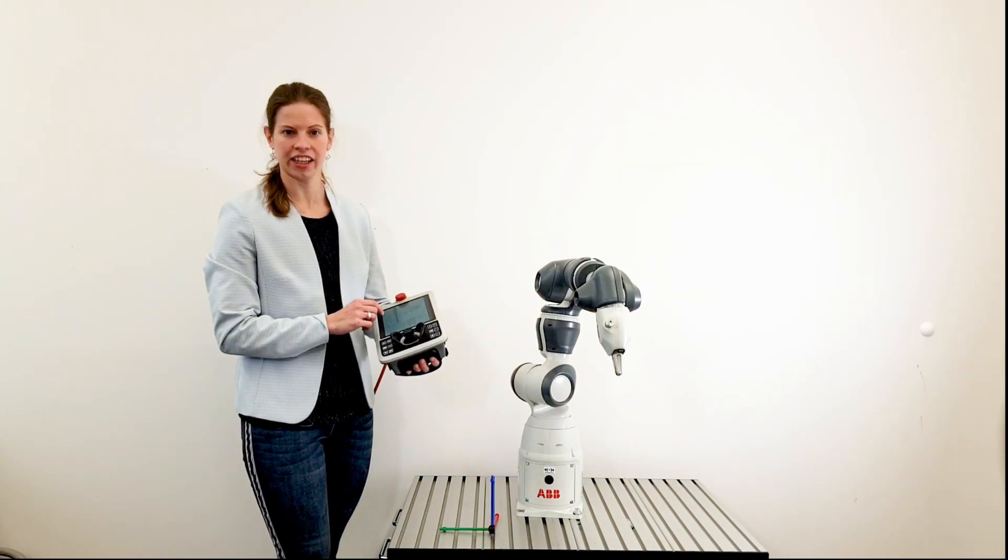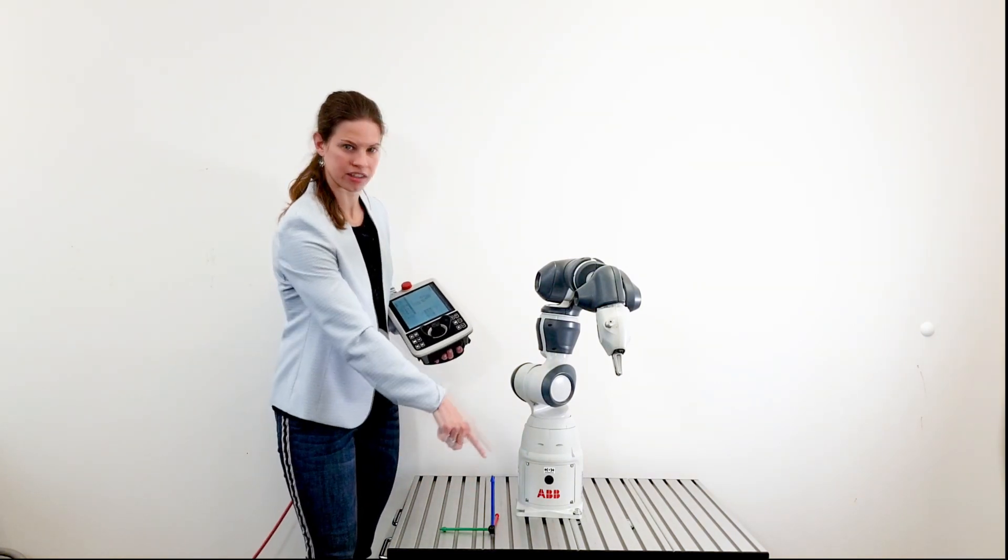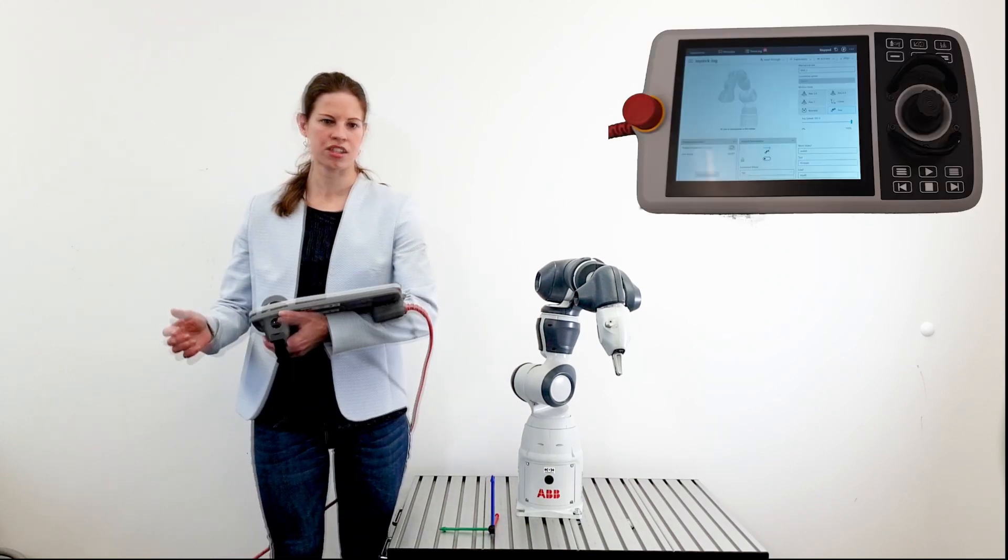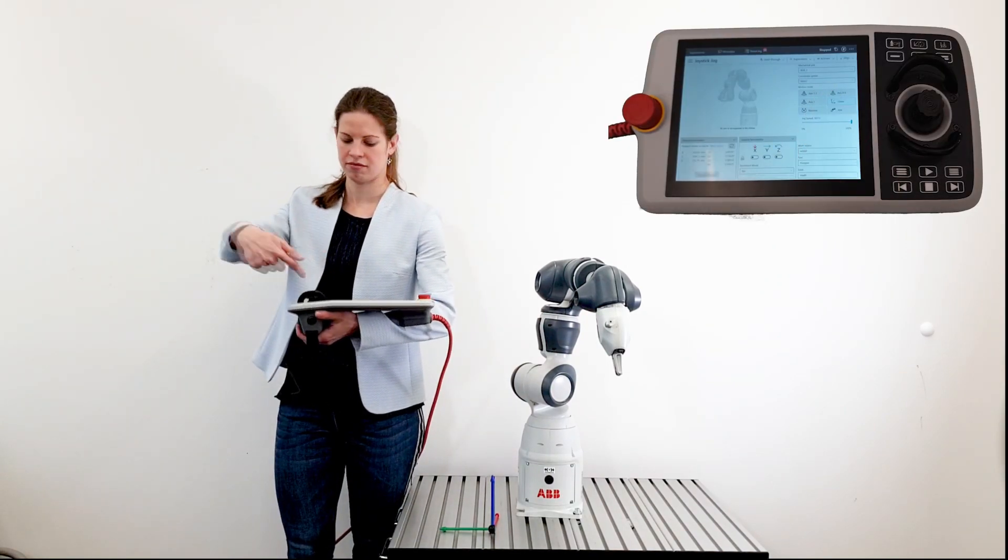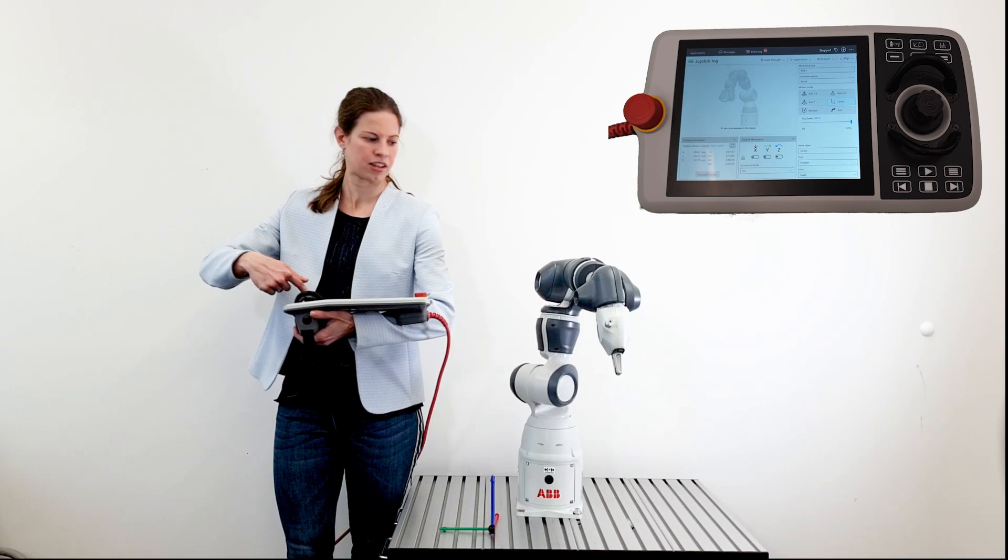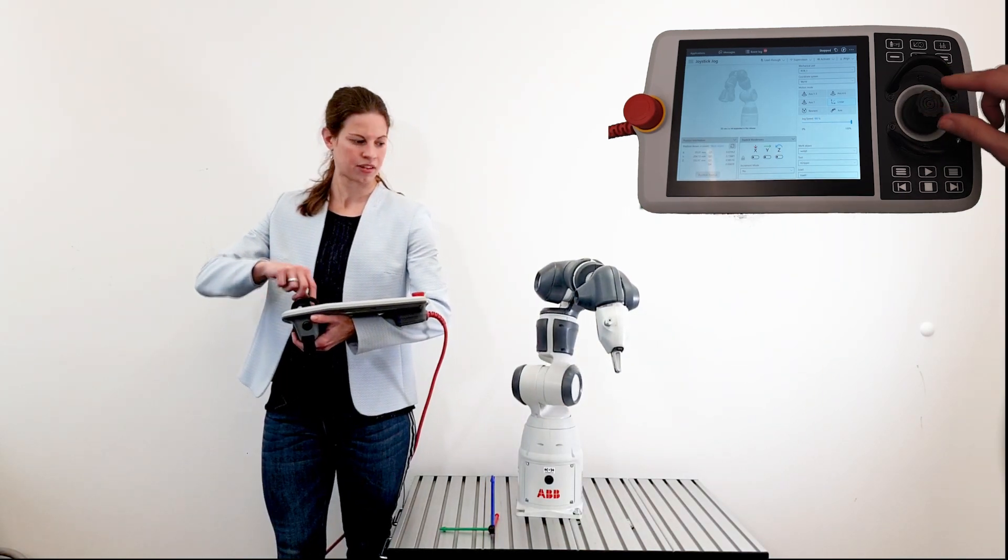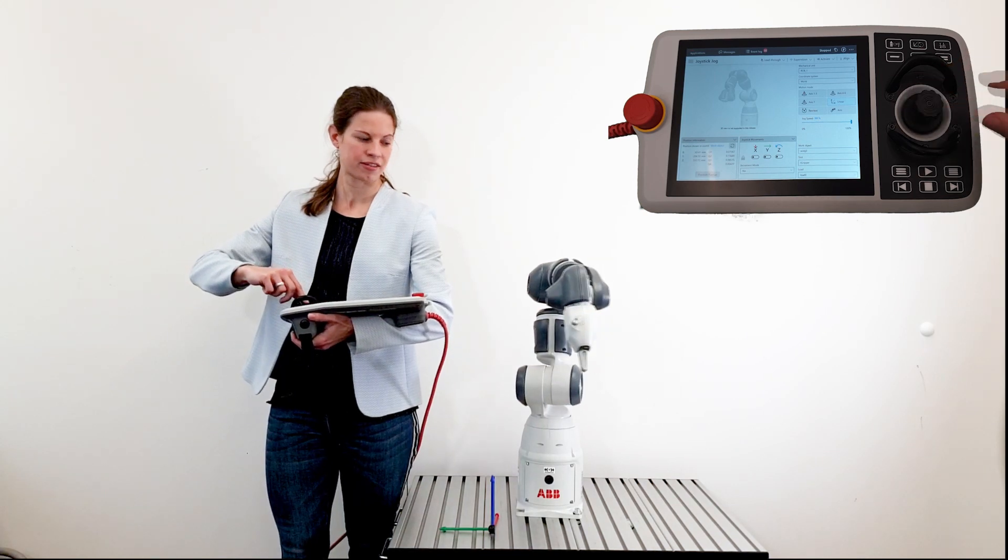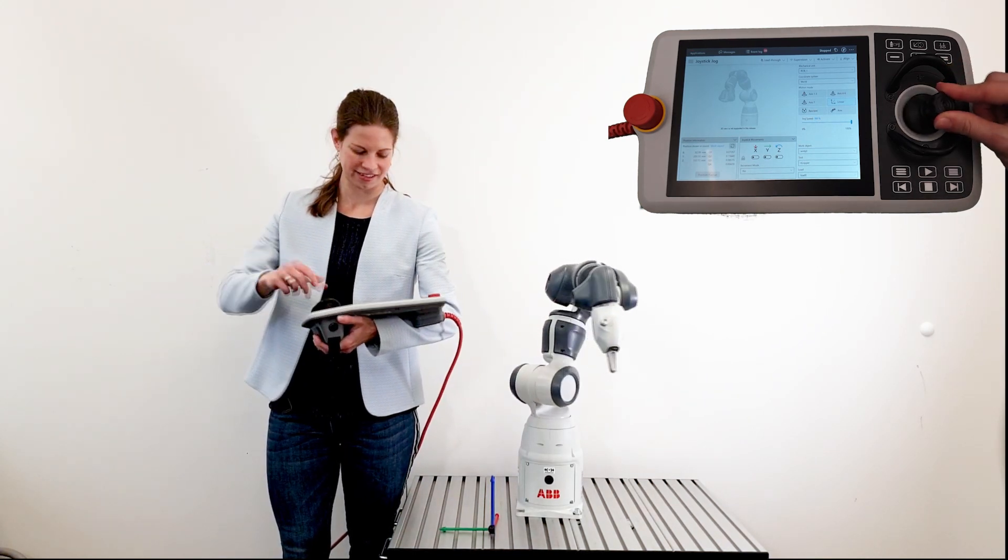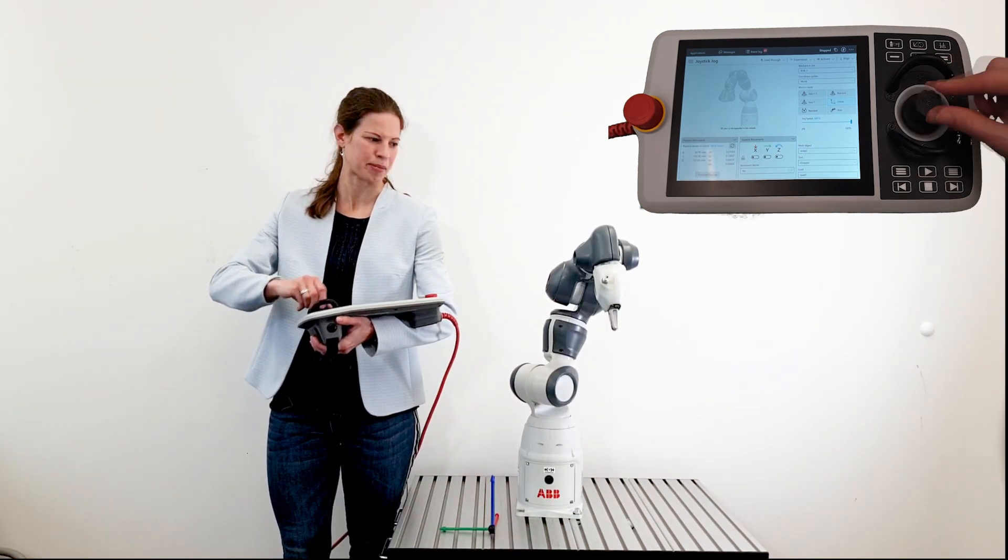Or we move linear which means in this coordinate system. So stand like this and you move with a joystick. X, Y, and Z up and down.